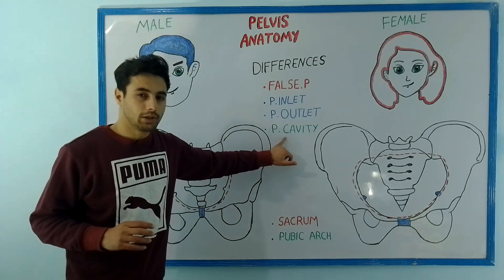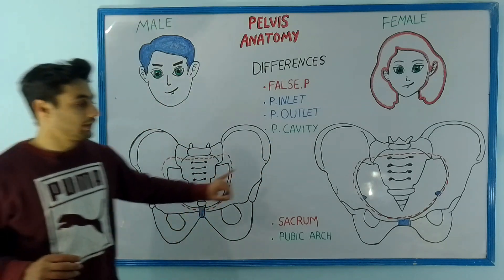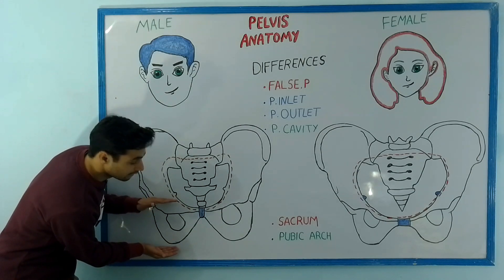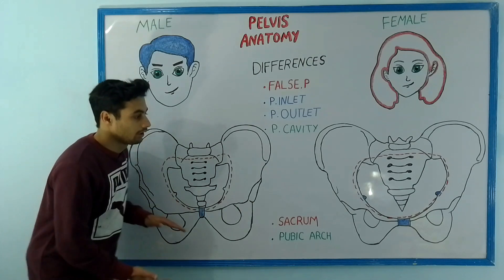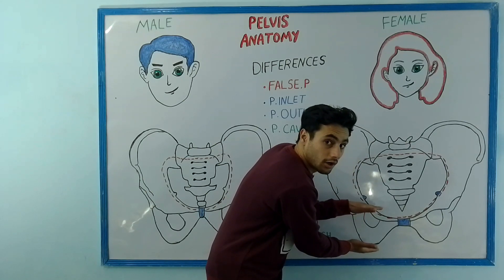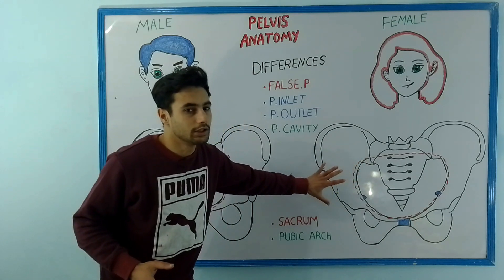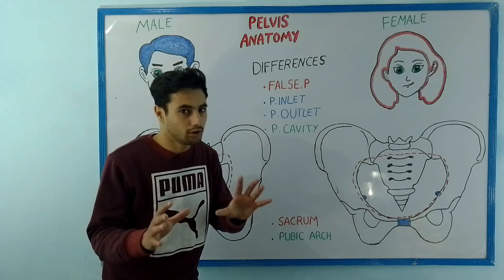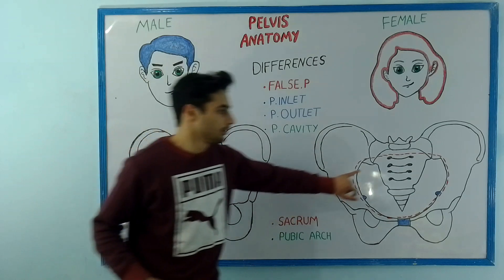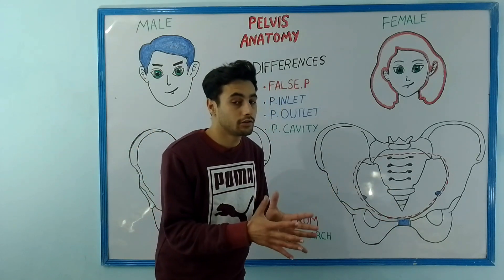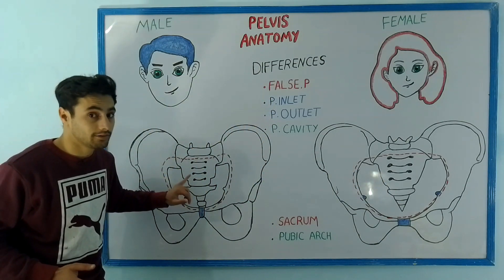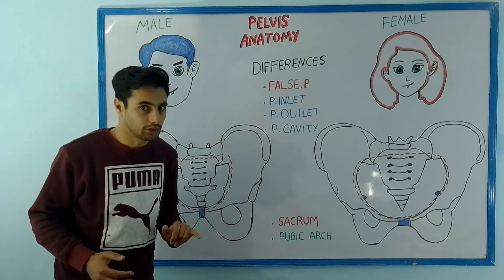Now look at the pelvic cavity of the males as well as the female. Note the distance between the pelvic inlet and the pelvic outlet — it is greater in case of males, but the distance between the pelvic inlet and the pelvic outlet is smaller in case of females. It means the pelvic cavity in case of females is small in comparison to the pelvic cavity in case of males. Look at the sacrum bone of the female — it is flatter and wider compared with the sacrum bone of the male, which is not as flat as the female bone.